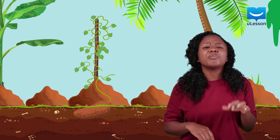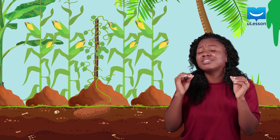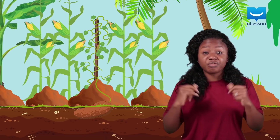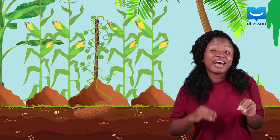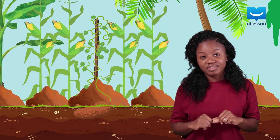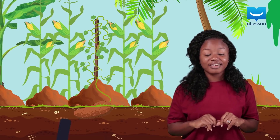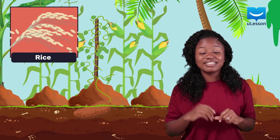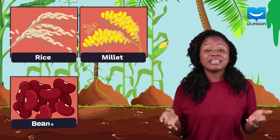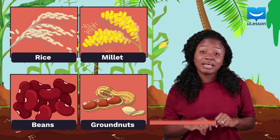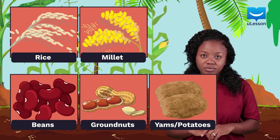You may have noticed that the maize plant shows up around the same season every year. This is because they are annuals. Other annuals are rice, millet, beans, granates, yams, and potatoes.